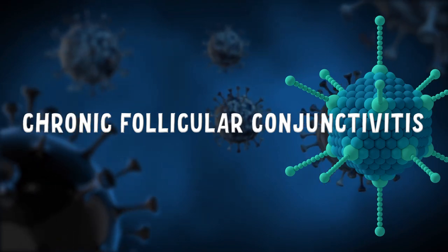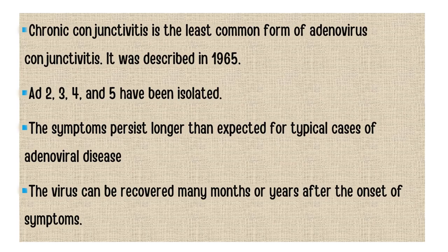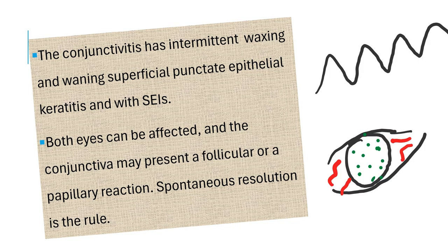The fourth presentation is chronic follicular conjunctivitis — the least common form of adenoviral conjunctivitis. Adenovirus serotypes 2, 3, 4, and 5 have been isolated. Symptoms persist for much longer than in a typical adenovirus case and can sometimes be recovered months to years after onset. Patients have a waxing and waning superficial punctate epithelial keratitis and sometimes sub-epithelial infiltrates as well. Both eyes can be affected with follicular reaction, but there will be spontaneous resolution.